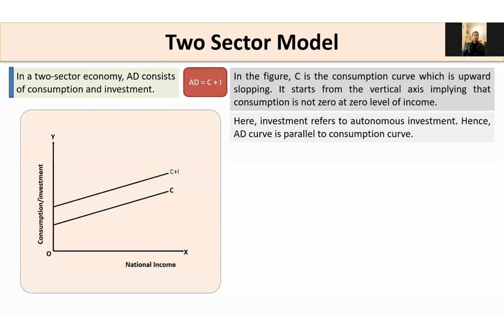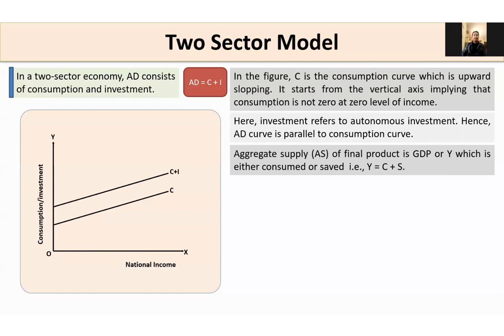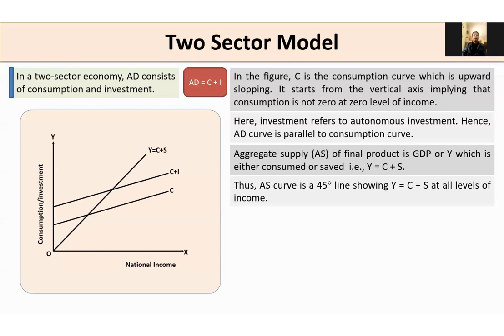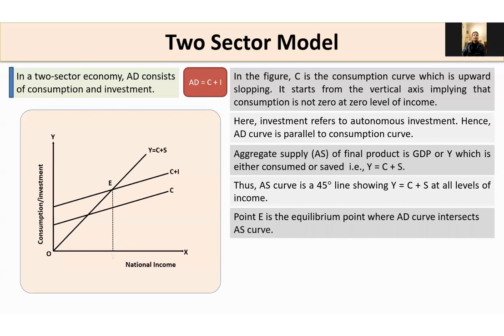Investment here refers to autonomous investment, hence the aggregate demand curve (C plus I) is parallel to the consumption curve. Aggregate supply of final product is GDP — in other words, GDP is the sum total of supply of all goods and services. GDP can also be written as Y, which is either consumed or saved, so Y equals C plus S. Thus, the aggregate supply curve is a 45-degree line showing Y equals C plus S at all levels of income. Point E is the equilibrium point where the aggregate demand curve intersects the aggregate supply curve.